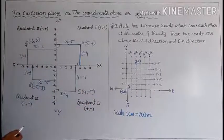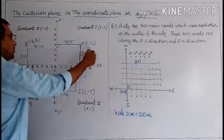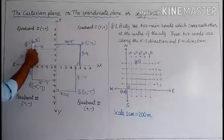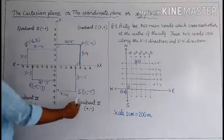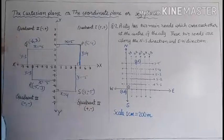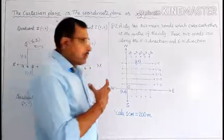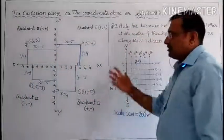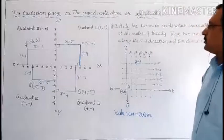So these are the coordinates of the four points. In Quadrant 1 both X and Y are positive; in Quadrant 2 X is negative and Y is positive; in Quadrant 3 both are negative; in Quadrant 4 X is positive and Y is negative. This is how the Cartesian coordinate plane or XY plane is divided into 4 quadrants.